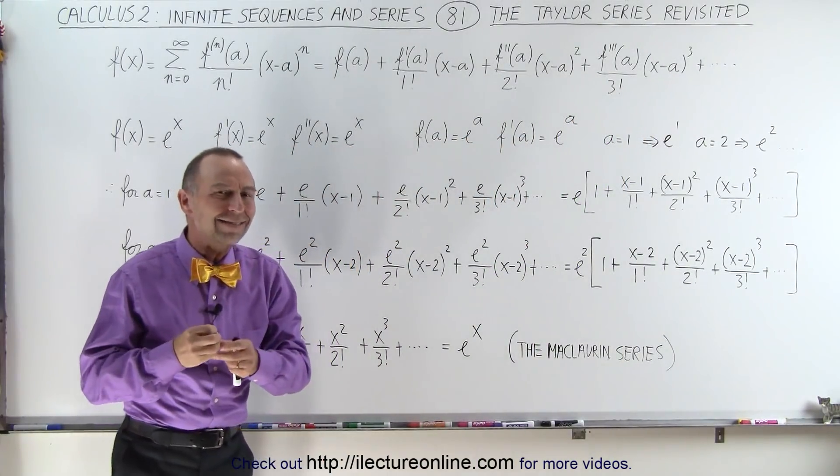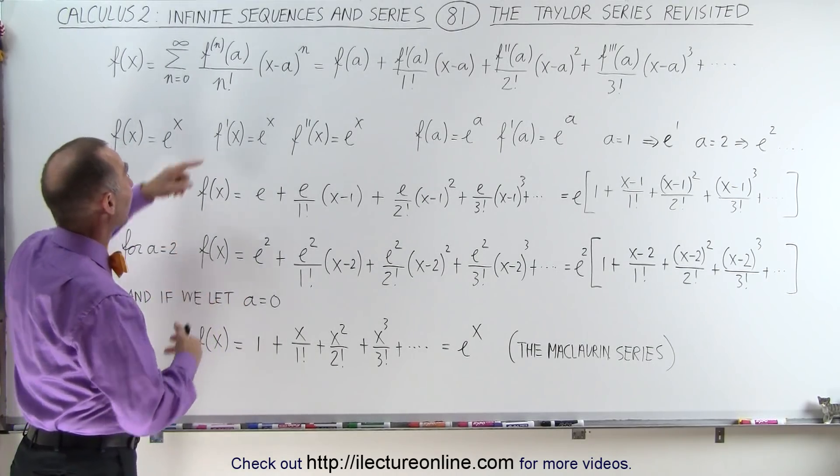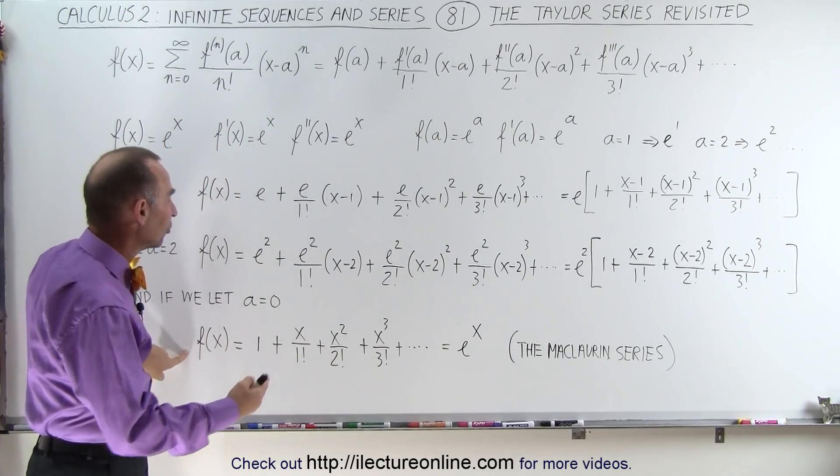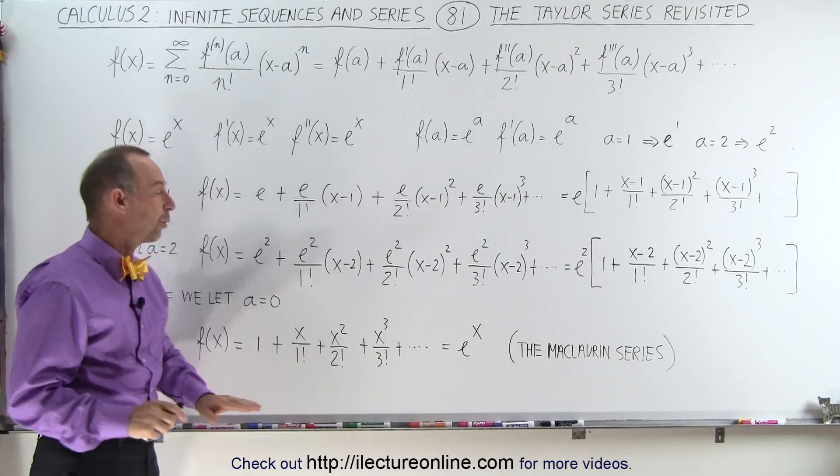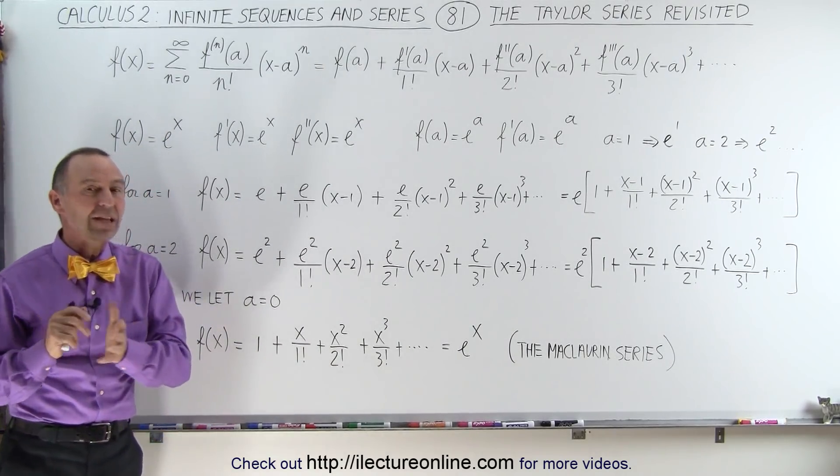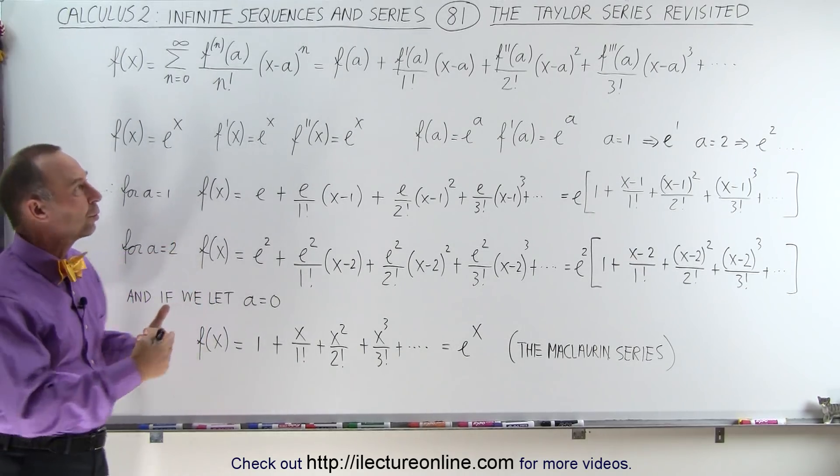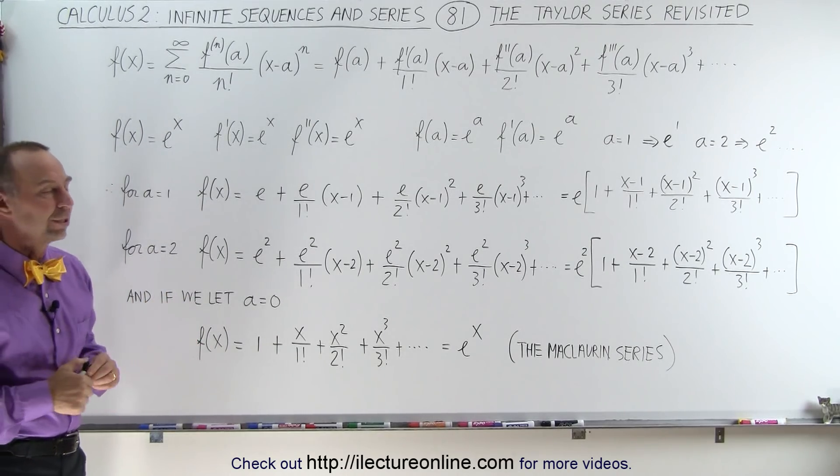What does that a signify? Why do we need it? And of course, we know that if we let a go to 0, then we end up with the equivalent function now called the Maclaurin series, which looks like this. Now, that is when we have the function being equal to e^x. And that's the example we're going to use to try and figure out the differences between the Maclaurin series and the Taylor series and why we use one versus the other.